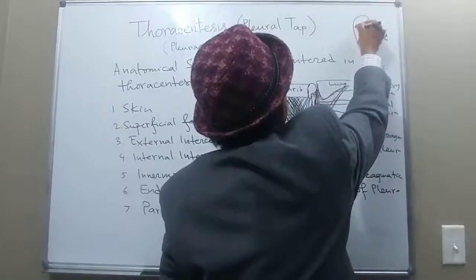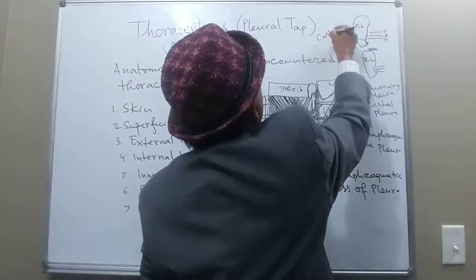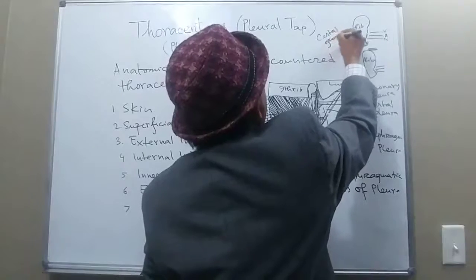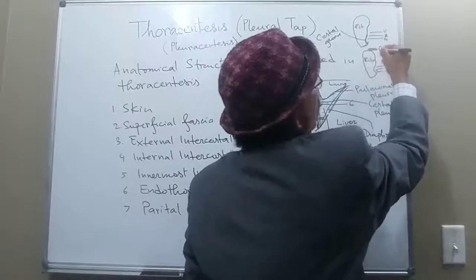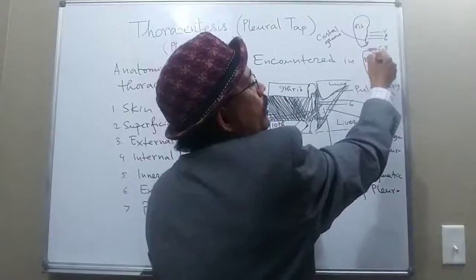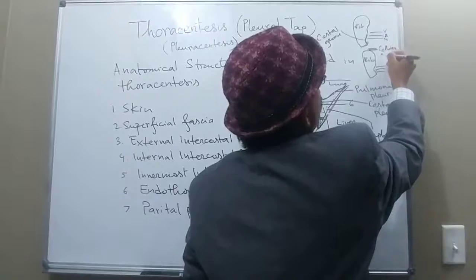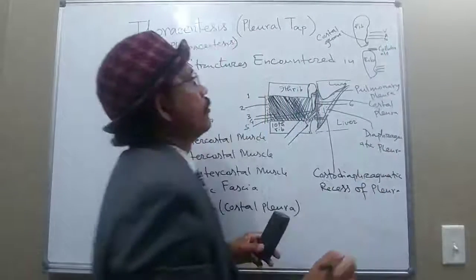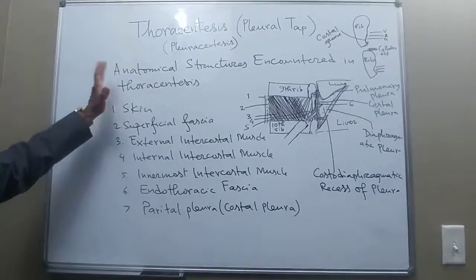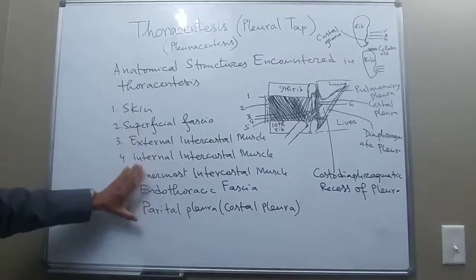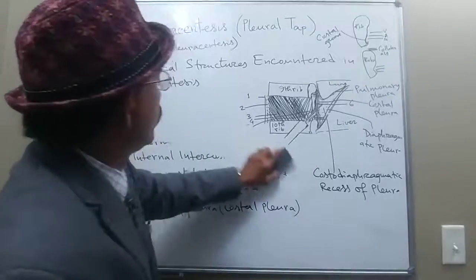This costal groove neurovascular bundle — containing the intercostal vein, artery, and nerve — runs along the lower part of the intercostal space. The collaterals of the intercostal artery, vein, and nerve are found above the lower rib. These are all the anatomical structures encountered in thoracentesis.